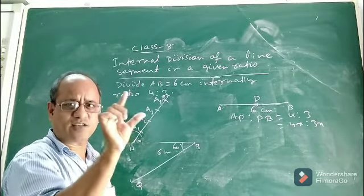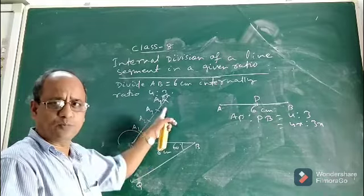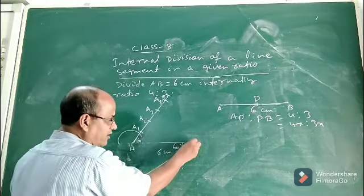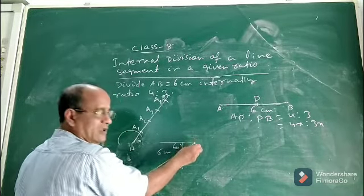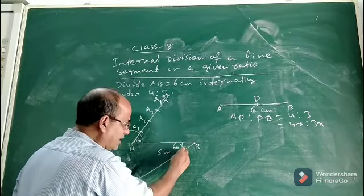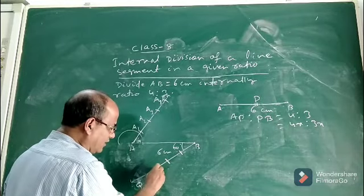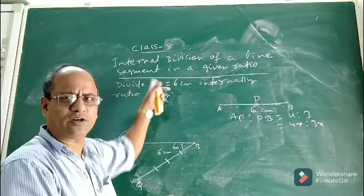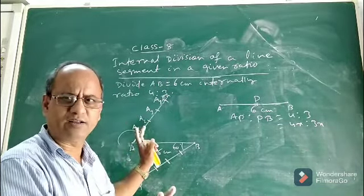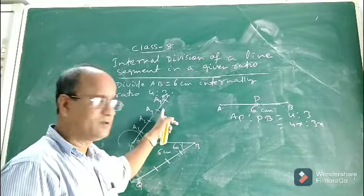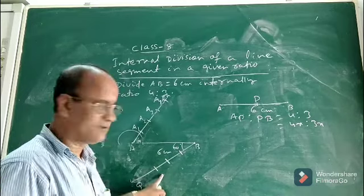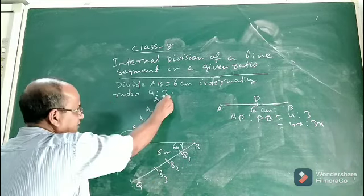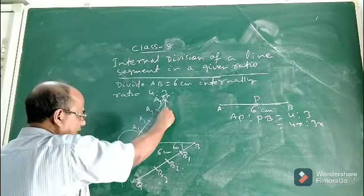Using the same arc length — don't change it — bring the rounder to vertex B and cut the same arc. But here you cut only three parts, not seven. There is no need to show all seven equal arcs; four arcs from A and three arcs from B are sufficient. Name these points B1, B2, and B3. Now join the fourth part from A and the third part from B.